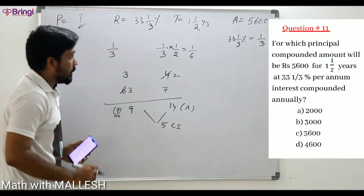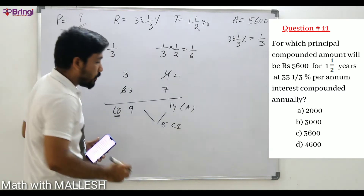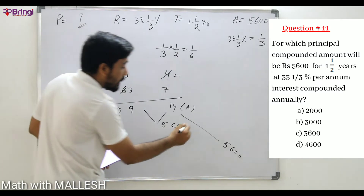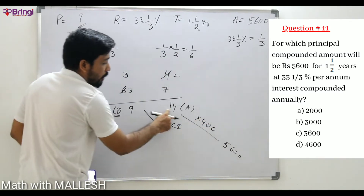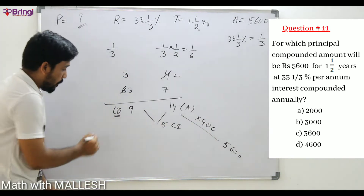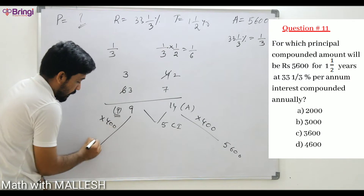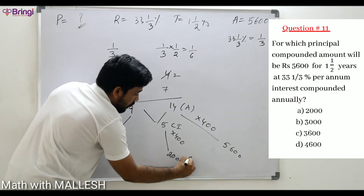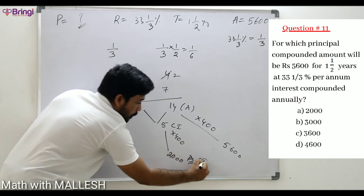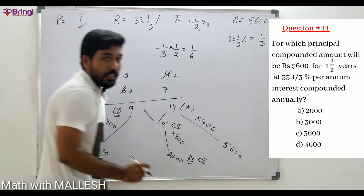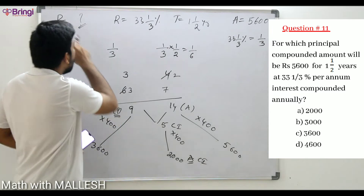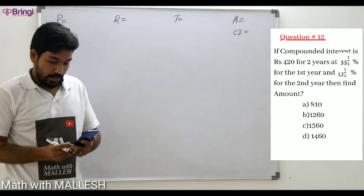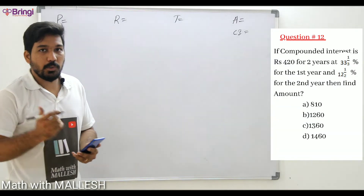From the question, Amount = 5600. At what ratio is 14 becoming 5600? We have to multiply by 400. So 14 × 400 = 5600. Here also multiply by 400: 9 × 400 = 3600 (principle), and the compound interest = 2000. So according to the question, the principal is 3600 — option C.